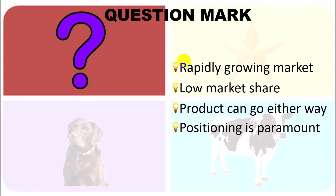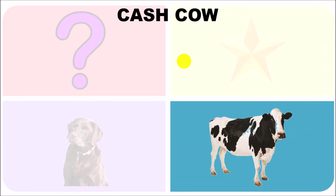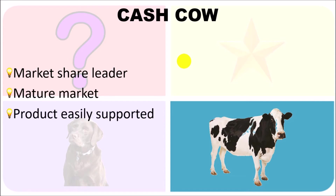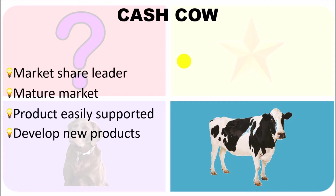Then we have cash cows — product lines that hold a market share leadership role in a mature market. Because the market is mature, the growth rate is low and it does not take a lot of effort to support the product. Less money is required to support sales, and because of the market leadership position you hold, the money you're making can be used to boost other product lines.